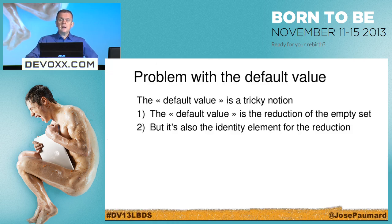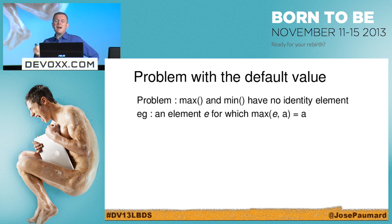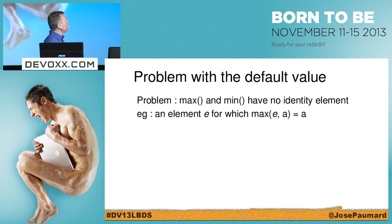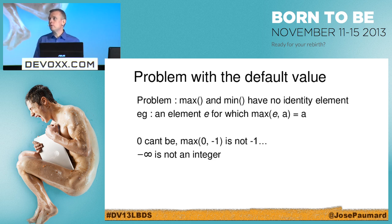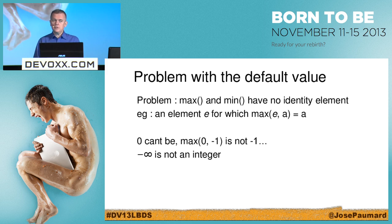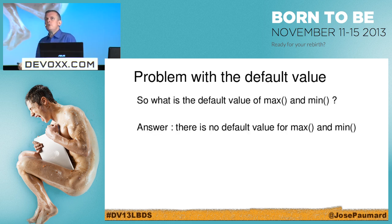The answer is simple: there is no default value for max and min. So what is the return type of the max() method on IntStream? If it's an int primitive, the default might be zero — but I don't want that. The solution is to create a new concept: OptionalInt — which tells me there might be no result, and it's up to the application to decide what to do with it.